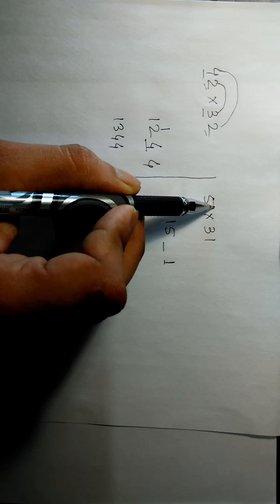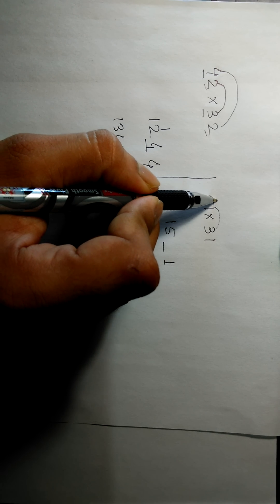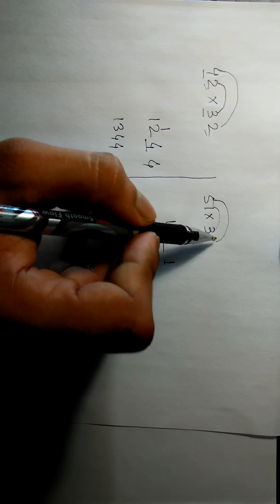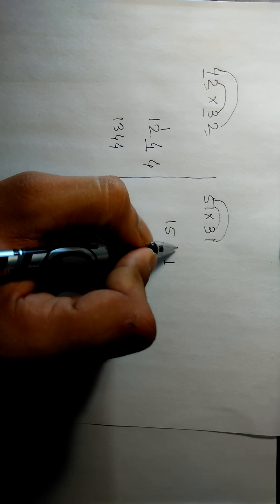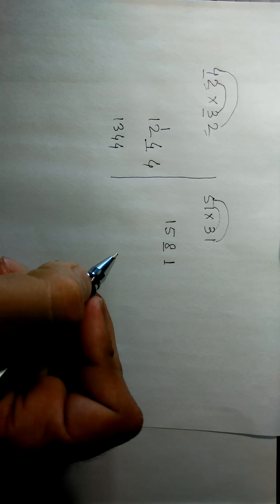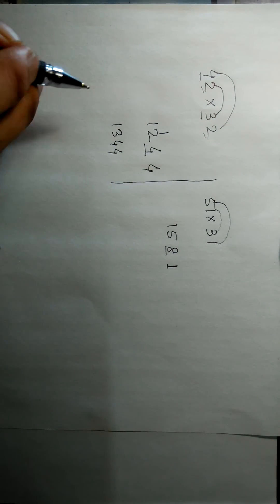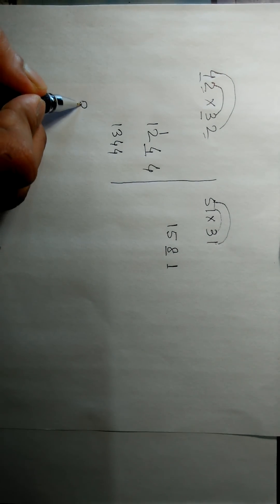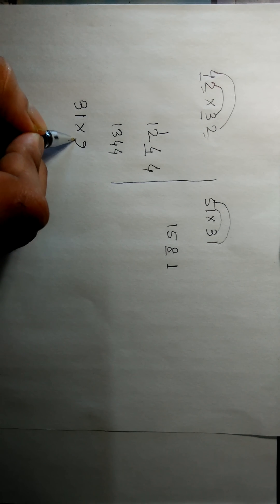That is 1 times 3 plus 5 times 1, which is 3 plus 5, that is 8. So this is the answer, 1581. Let us take another example, say 31 into 21.